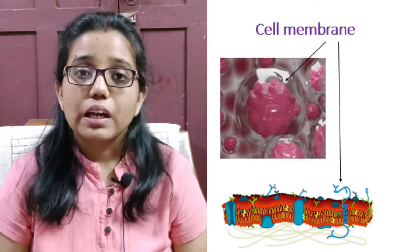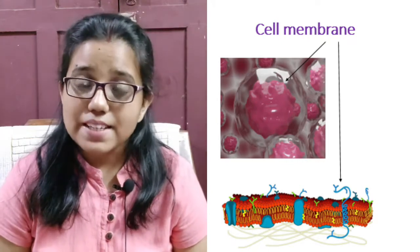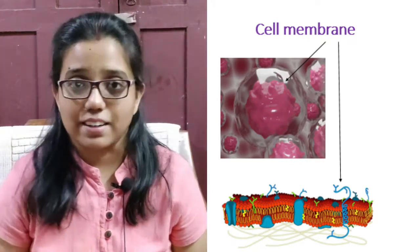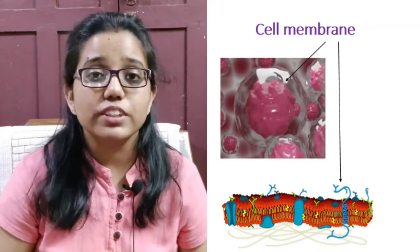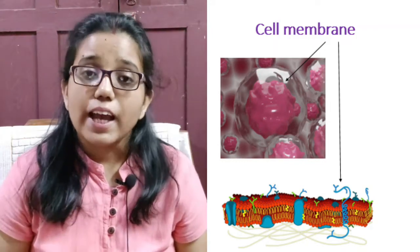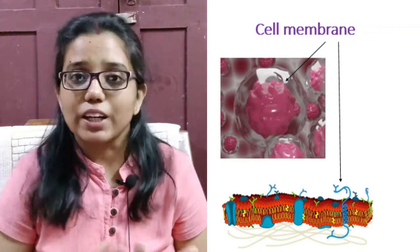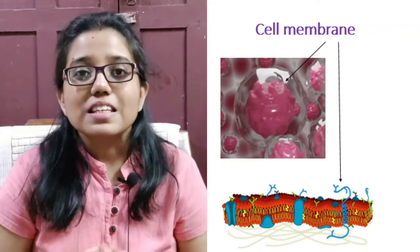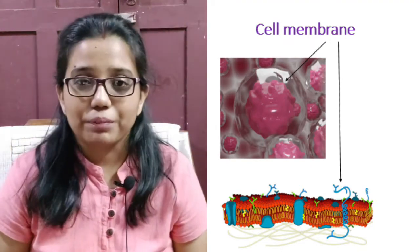Now, what is plasma membrane? Plasma membrane is the outermost covering of the cell. It separates the content of the cell from the external environment. It also allows the entry and exit of some materials from the cell and prevents the movement of some other materials by diffusion and osmosis. Therefore, cell membrane or plasma membrane is called selectively permeable membrane.